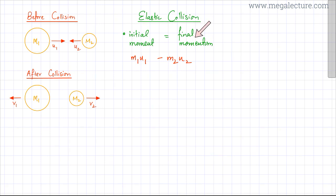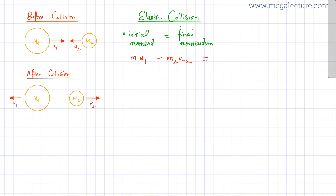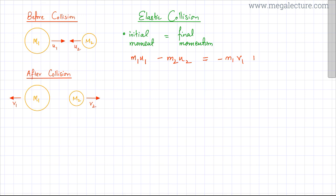Initial momentum equals final momentum, so calculating the final momentum after collision: the first object has final momentum M1·V1, but it's going towards the left (negative direction), so it contributes minus M1·V1. The second object has momentum M2·V2, going in the positive (rightward) direction, so it contributes plus M2·V2. Setting initial equal to final: M1·U1 minus M2·U2 equals minus M1·V1 plus M2·V2.